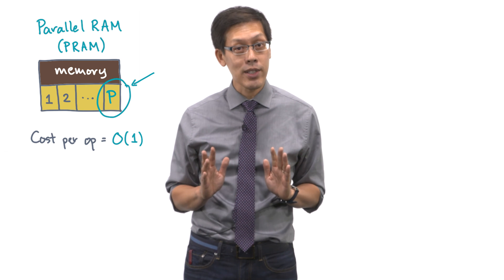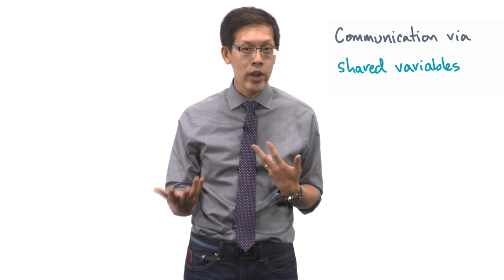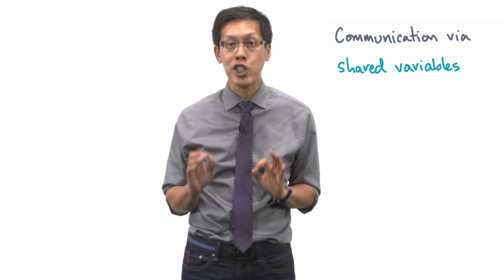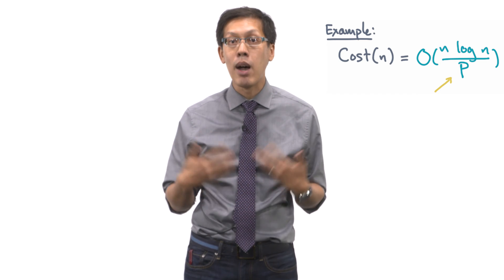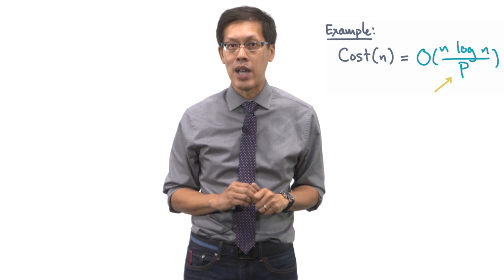And since the processors all see the same memory, they can coordinate and communicate by modifying shared variables. Now in this model, your algorithmic analysis will involve big O's as before. But you'll try to reduce the total cost by up to a factor of P, the number of processors.